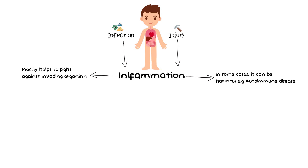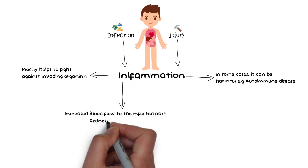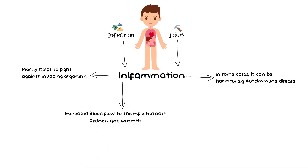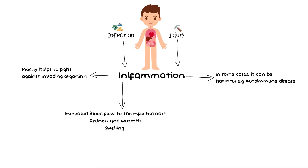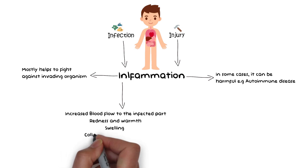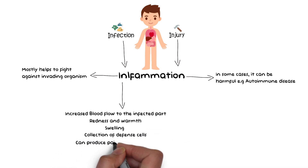During inflammation, blood flow to the injured or infected part is increased many folds. This causes redness and warmth in the affected area and hence results in swelling of the organ. The increased blood flow causes white blood cells to gather in the affected part and provide a defense against the invading organism. And because of these vascular changes, an inflammatory response can also produce pain and discomfort.